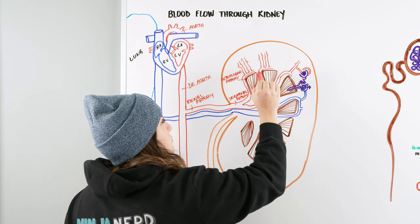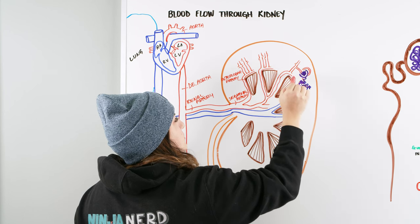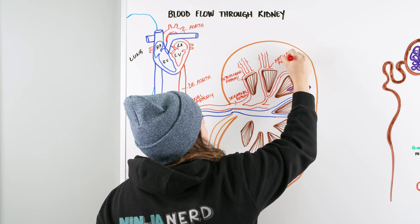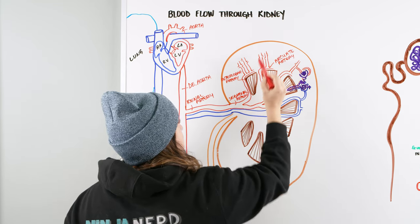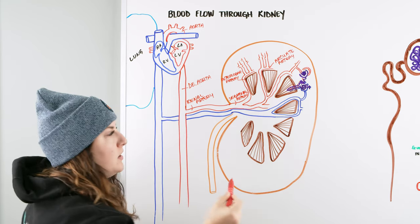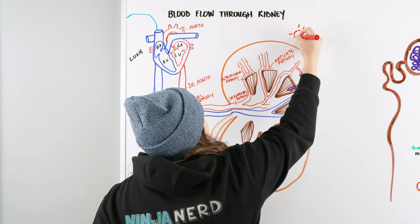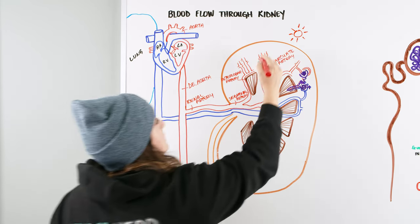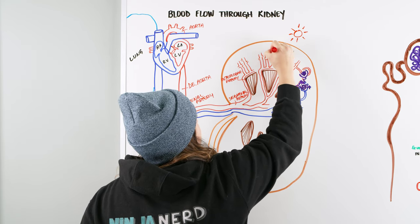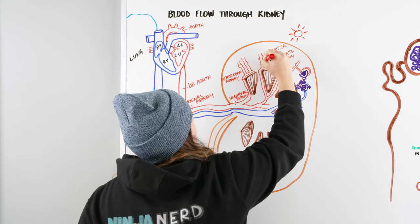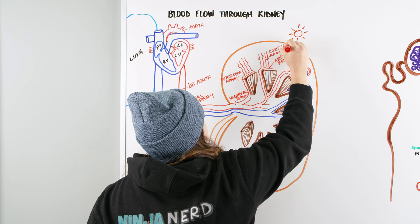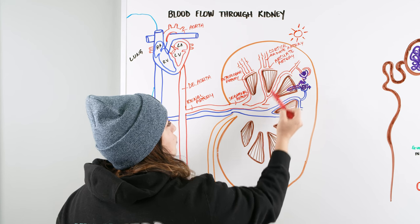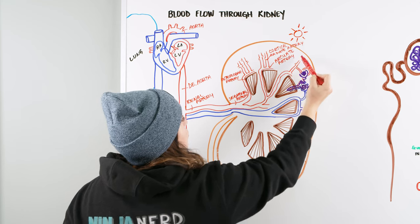From the interlobar artery, we have a vessel that starts to arch around the top — that's our arcuate artery. The arcuate artery then sends off shoots radiating outward — like rays of the sun — into the cortex. These vessels radiating into the cortex are called our cortical radiate arteries.